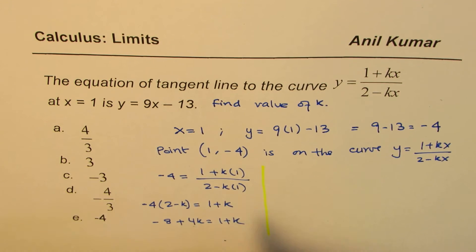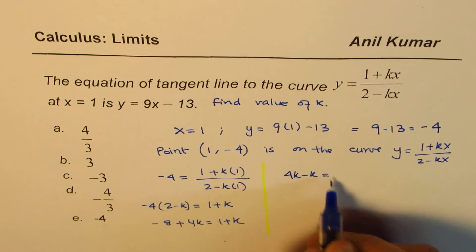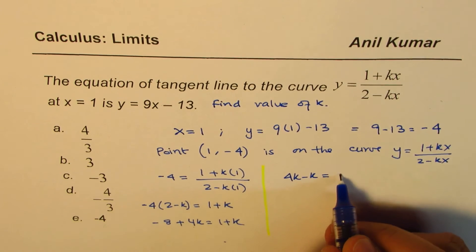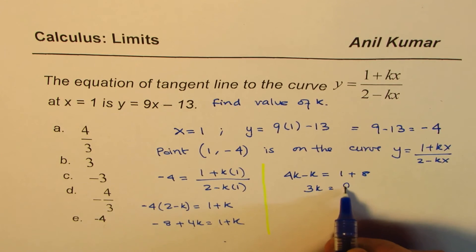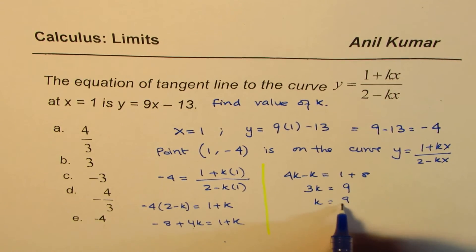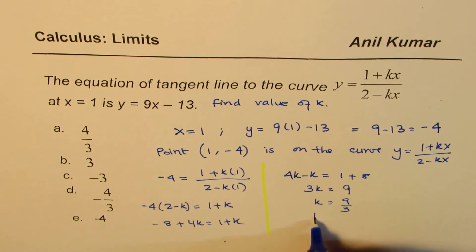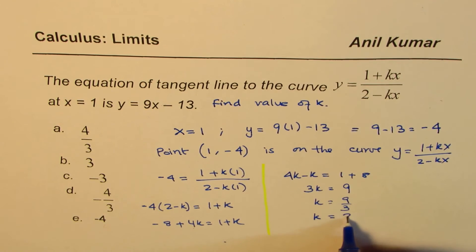Bringing k to this side gives us 4k - k = 1 + 8. That is 3k = 9, and k = 9/3. That means k = 3.